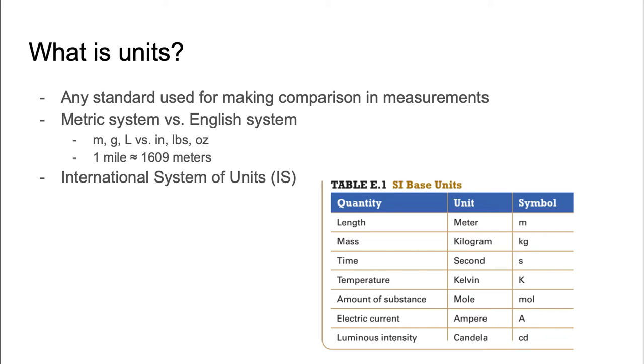There are two common metric systems in America, metric system and English system. English system is inches, pounds, ounces that you can see in supermarket or such. And metric system is more widely used outside the United States which is meters, grams, and liters.